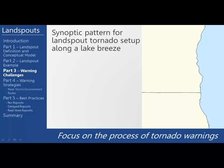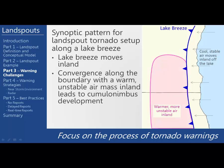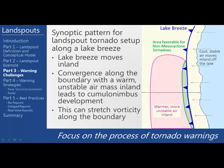Landspouts are not just confined to the plains region. The synoptic conditions along a lake breeze also support the development of landspout tornadoes. A boundary develops as a lake breeze moves inland, shown by the blue cold front in the image to the right. Convergence along this boundary with a warm and unstable air mass driven by heating leads to cumulonimbus development, which can lead to stretching of pre-existing vorticity along the boundary and landspout tornado development. Waterspouts form in a similar fashion, only over water instead of land.